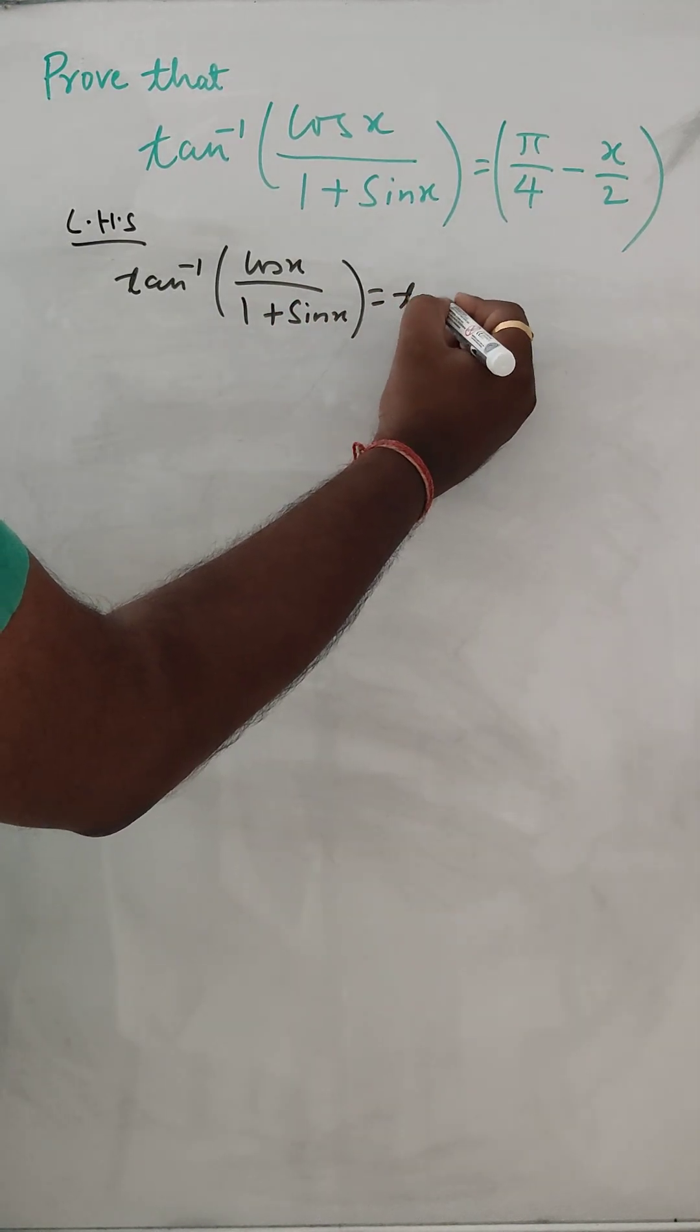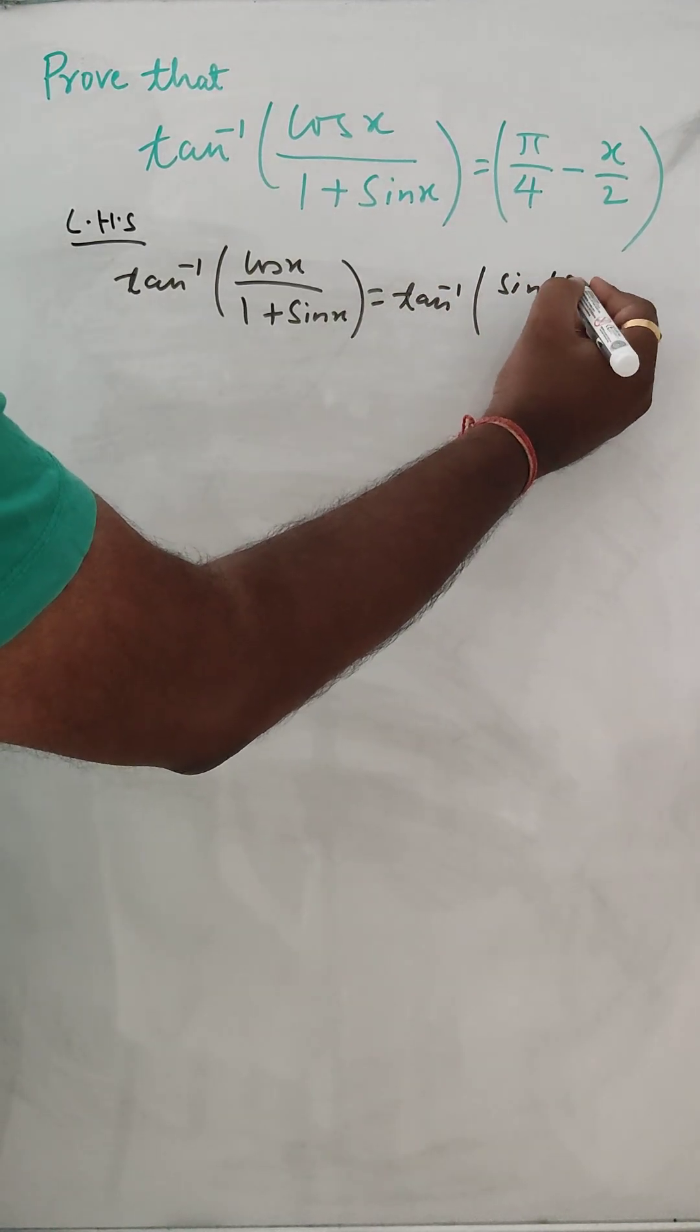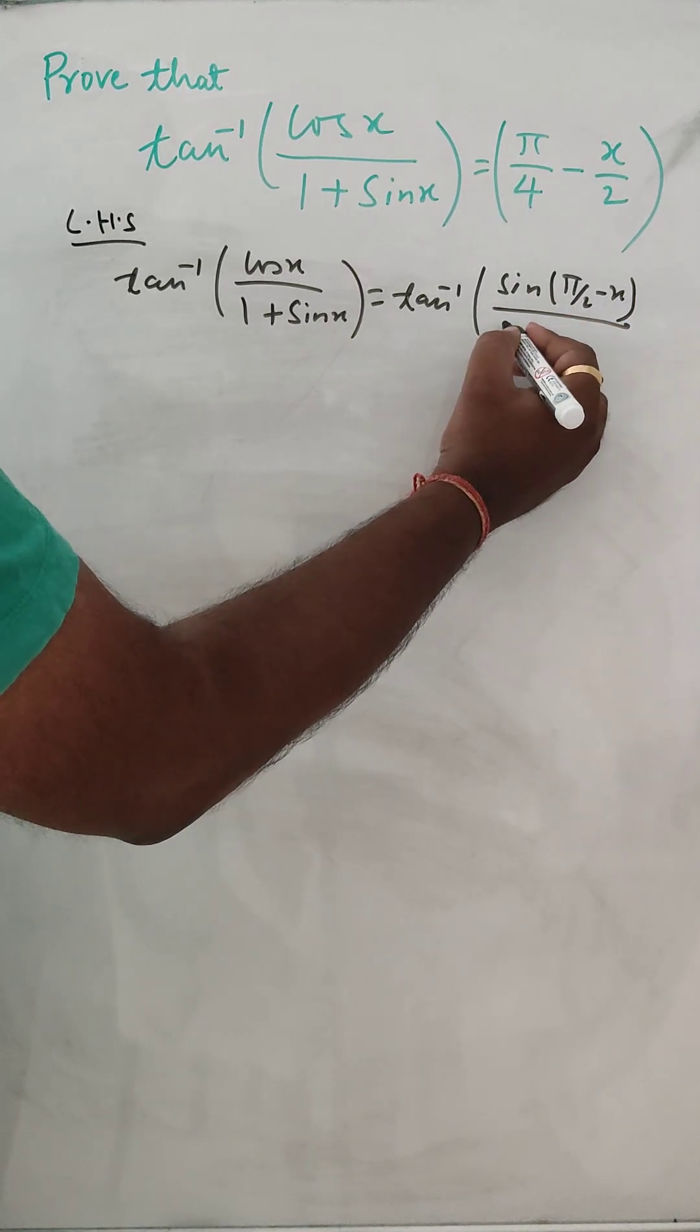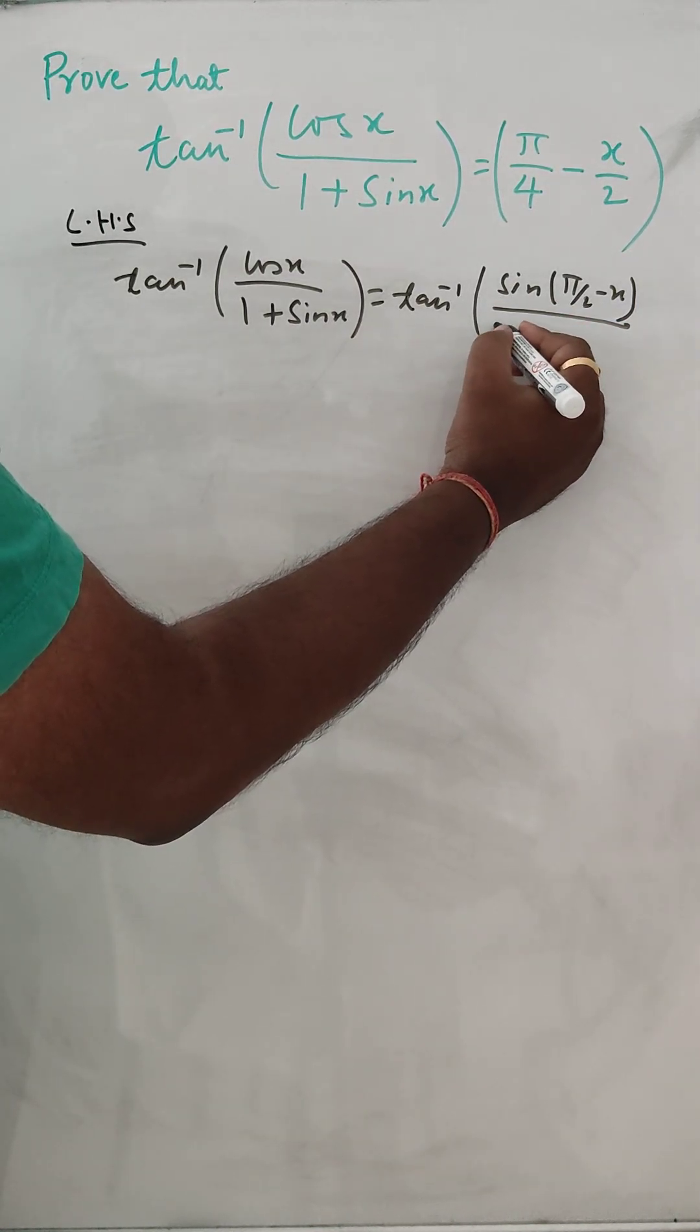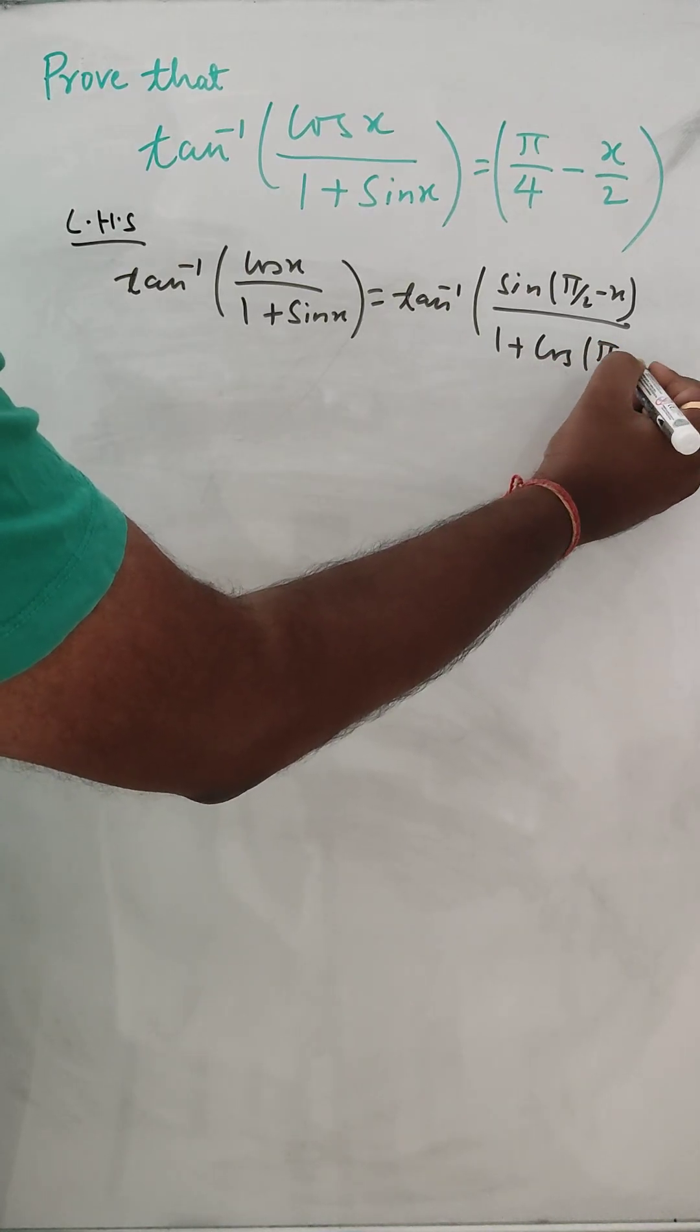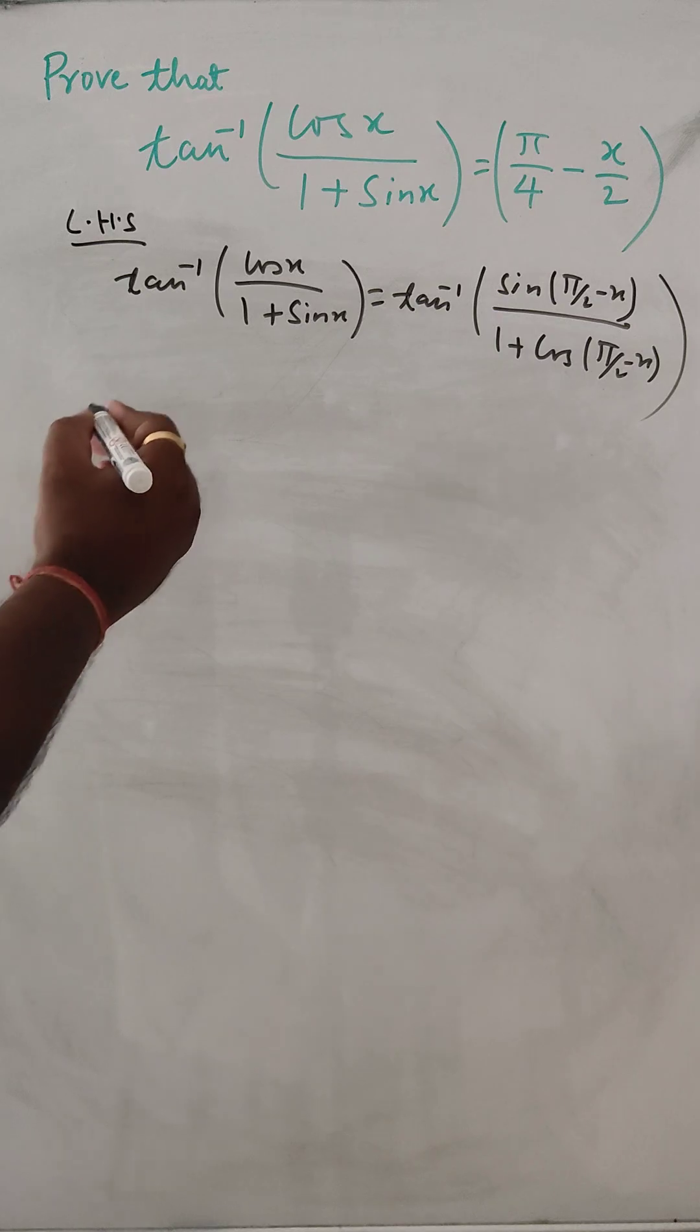So we can do tan inverse sin pi by 2 minus x, and this we can do 1 plus cos pi by 2 minus x.